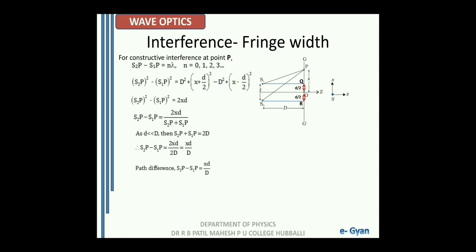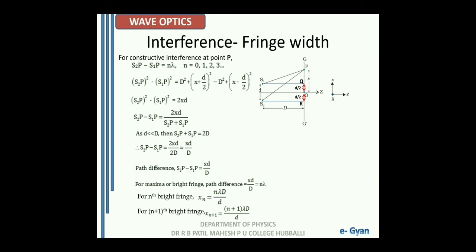The path difference S2P − S1P is given as x times small d divided by capital D. For a bright fringe, the path difference xd/D must equal n times lambda. So for the nth bright fringe, we can write xn — the position of the nth bright fringe — as n times lambda times capital D divided by small d.